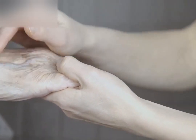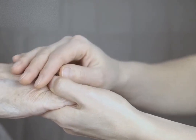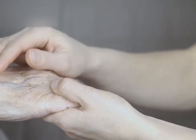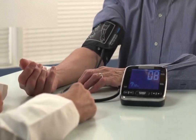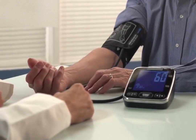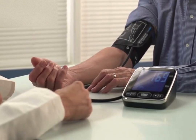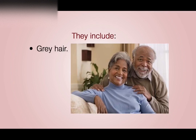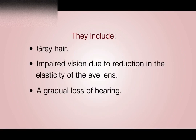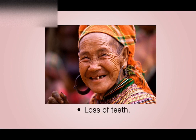Now, let's look at old age. As we grow older, certain physical and physiological changes begin to occur as a result of decreasing production of sex hormones. Some people go through decline — they may decline in their health — but others remain active and capable of their daily activities until the end of their lives. Most of the physical changes associated with aging begin to show between the ages of 30 and 40. They include the appearance of gray hair, impaired vision due to a reduction in the elasticity of the eye lens, a gradual loss of hearing, and even loss of teeth in some people.